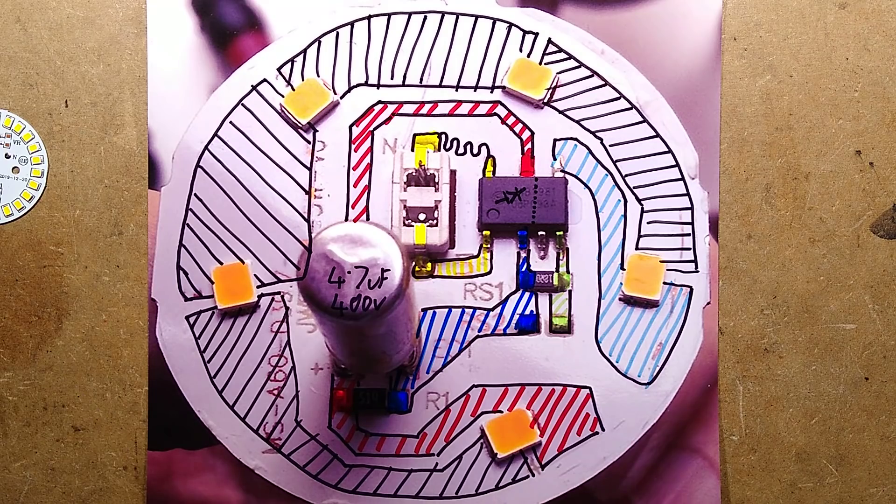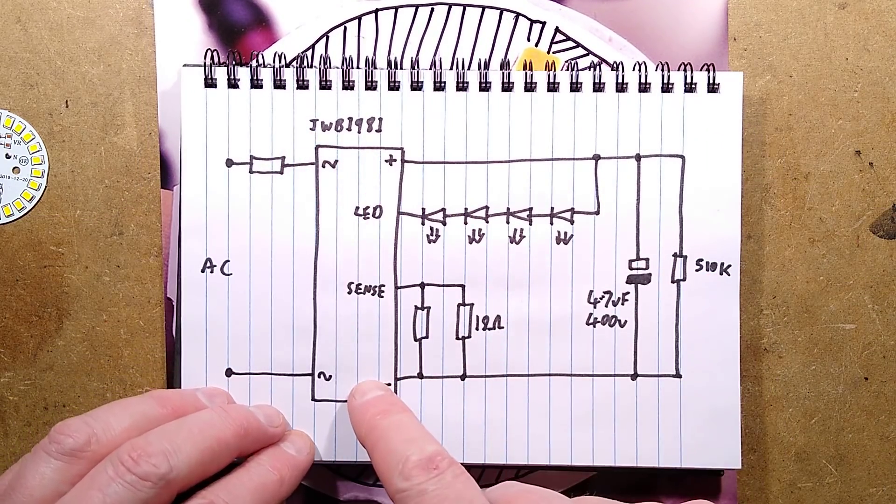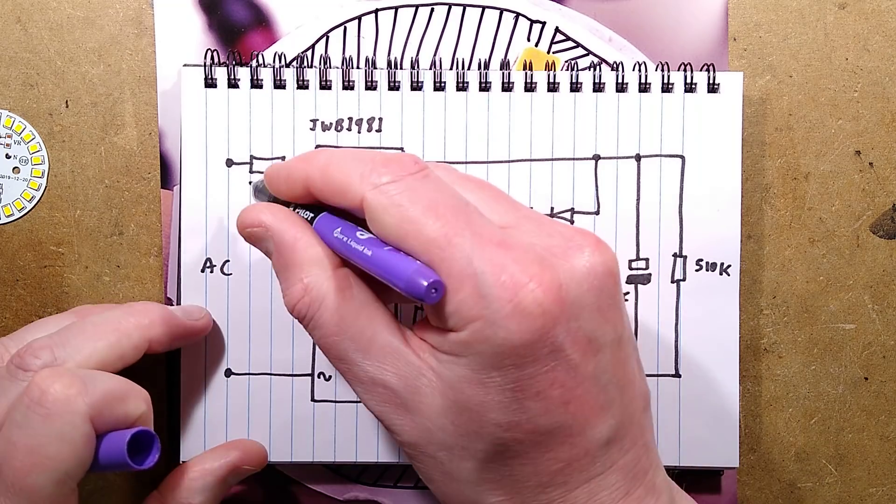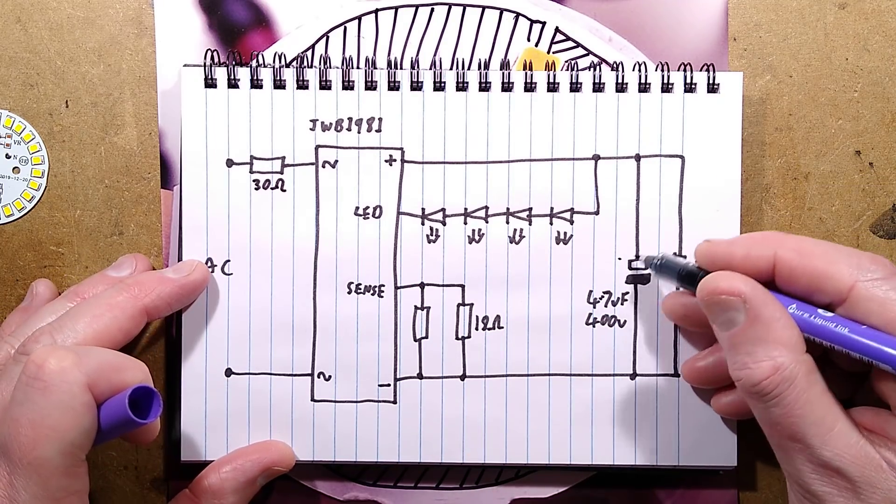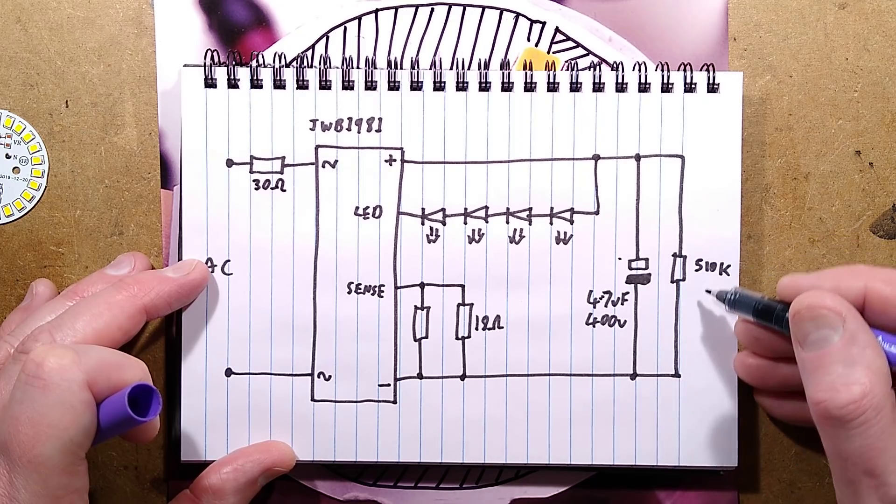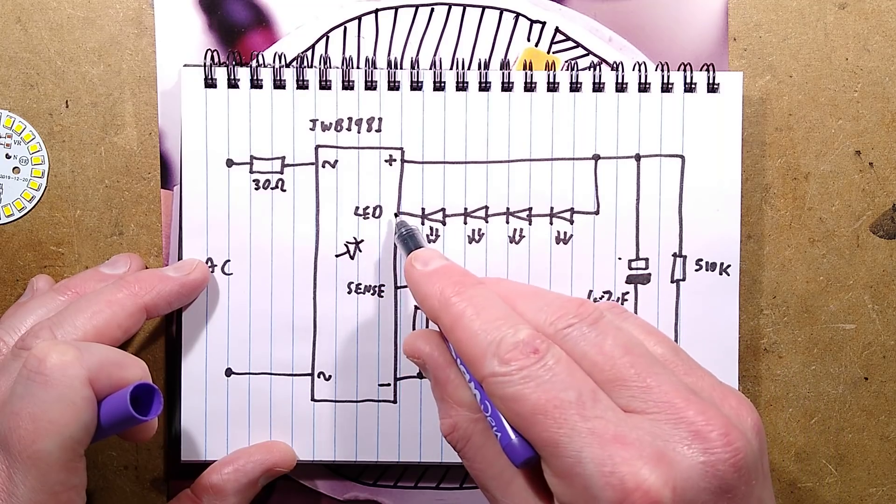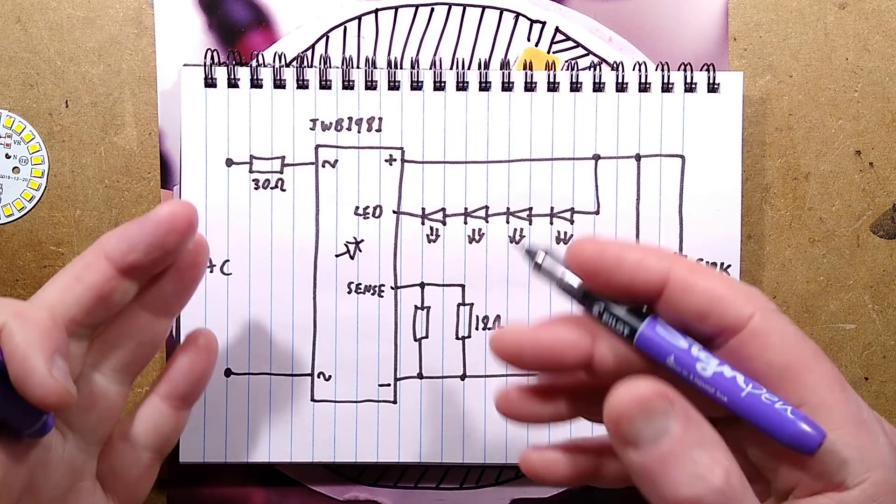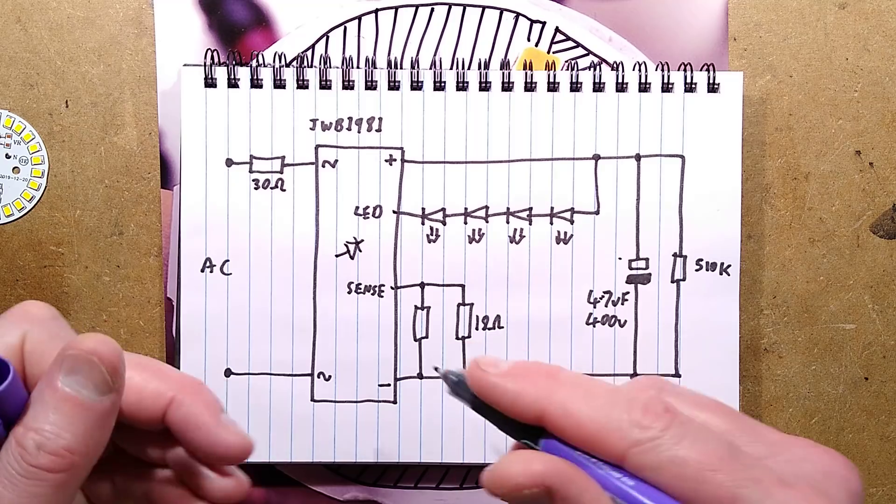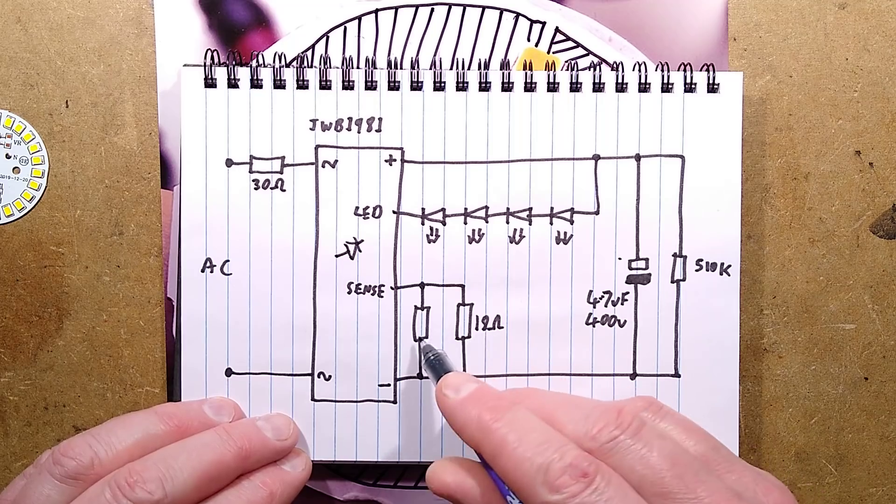Let me grab my notepad and show you this schematic. Here's the schematic. So here's the JWB 1981 chip. There's the resistor. I'll make a wild guess that that's going to be 30 ohms. There's the smoothing capacitor. Again, I guess 4.7 microfarad 400 volts and the 510k resistor across it. So this effectively acts as that bridge rectifier, but it's got these extra pins. It will have basically a couple of transistors and some extra circuitry in there to actually act as a sort of current regulator. And that's really about it.